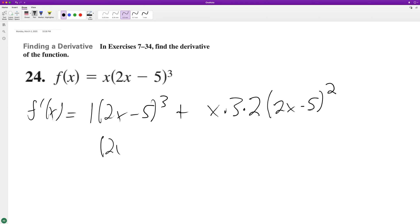Simplify: two x minus five cubed plus six x two x minus five raised to the second.